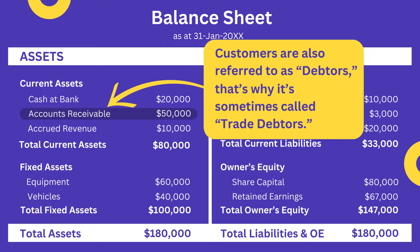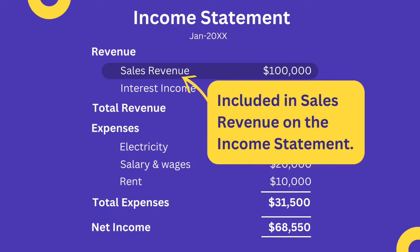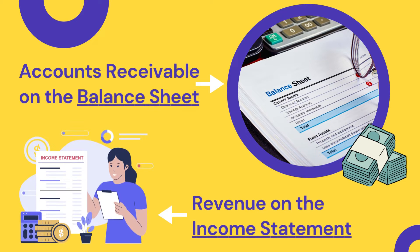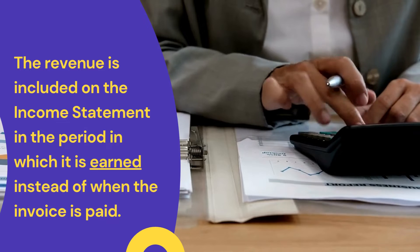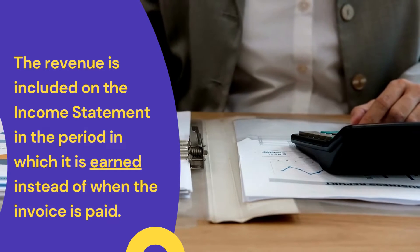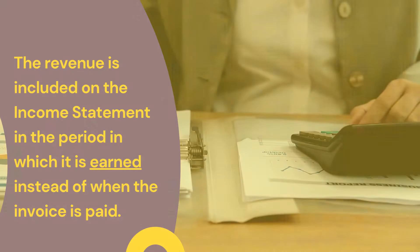She also explains that when you create an invoice on the system, the amount of the invoice is included as revenue on the income statement. So even though the customer hasn't paid you yet, the money they owe you is included in Accounts Receivable on the balance sheet and as revenue on the income statement. This means that the revenue is included on the income statement in the period in which the invoice is earned, instead of the period in which the invoice is paid — ensuring that the business's accounts comply with the rules and regulations of accrual accounting.